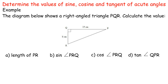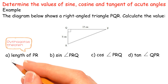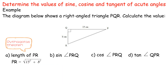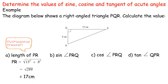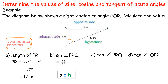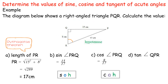Solution. (A) Length of PR: PR equals square root of 15 squared plus 8 squared, equals square root of 289, equals 17 centimeters. (B) Sin angle PRQ equals 15 over 17. (C) Cos angle PRQ equals 8 over 17. (D) Tan angle QPR equals 8 over 15.